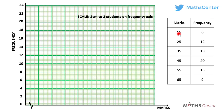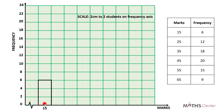Let's start with the first one, which will be for 15. The frequency is 6. So the first bar will occupy 10 minor divisions and the height will be at 6. From the previous video we learned that the mark for a bar will be at the center of the bar. Here the bar occupies 10 minor divisions, so the center will be at the 5th division. So the mark, which is 15, will be at the 5th division.